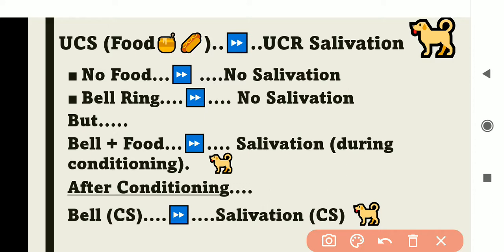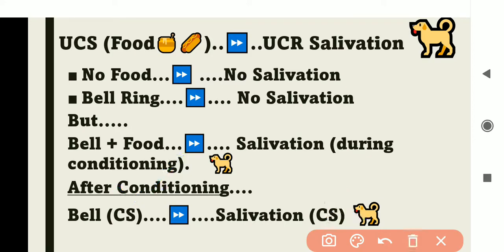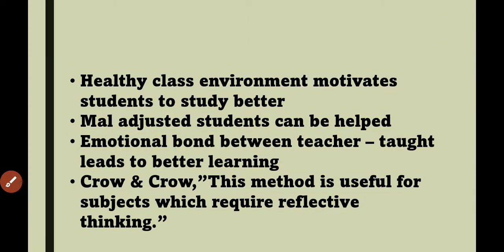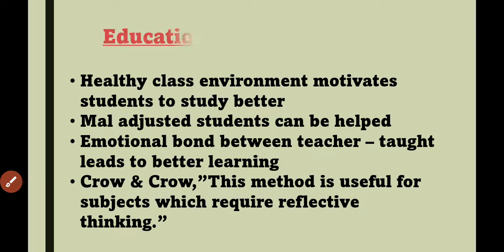So this is the CS and CR relationship. The conditioned stimulus (CS) leads to a conditioned response (CR). You can see that the response — salivation — occurs because the bell is rung and the dog is expecting food. This is the complete detail of Pavlov's classical conditioning experiment, showing how a neutral stimulus becomes a conditioned stimulus through repeated pairing with an unconditioned stimulus.